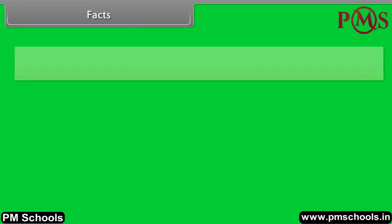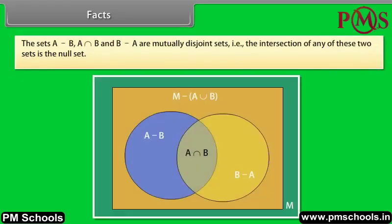Facts. The sets A minus B, A intersection B, and B minus A are mutually disjoint sets. That is, the intersection of any two of these sets is the null set.